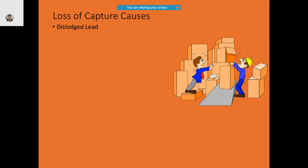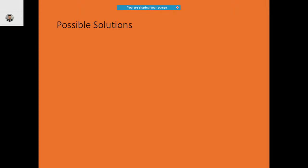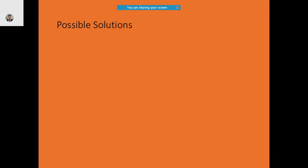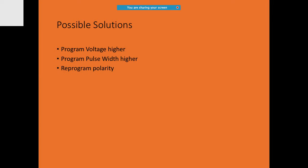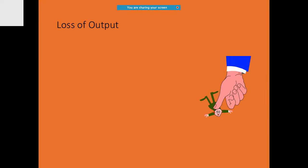Reasons for loss of capture include: exit block, insulation break, dislodged leads, perforation, and Twiddler syndrome. Twiddler syndrome is a complication after pacemaker implantation where the person keeps touching and fiddling with the device, causing the leads to get enrolled around one another. Possible solutions: program the voltage higher, increase the programmed pulse width, reprogram the polarity, or change the pacing leads.